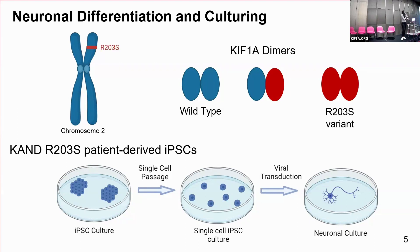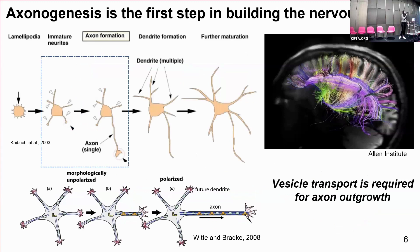We generate neurons using a viral transduction with the transcription factor Neurogenin-2. Basically it just produces neurons very rapidly and easily. But what we're interested in is the developmental stages from this iPSC to this neural phenotype and what kind of processes go on during this early development. So now I'll talk about axonogenesis — that basically means axon outgrowth or the formation of an axon, and it's the first step in building a nervous system.